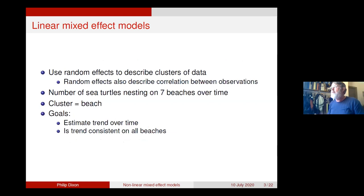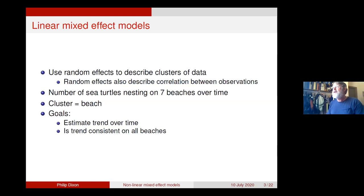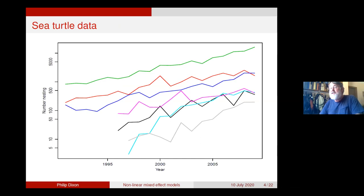A linear mixed effects model is an analysis of variance, or regression, where there are multiple sources of variability — extra random effects. Those random effects are often used to describe clusters of data, essentially describing correlations between observations. To reinforce some ideas, I'm going to look at a dataset of sea turtle nesting numbers on seven beaches over time. Each beach is observed for multiple years; the cluster is the beach. We want to estimate trend over time and ask whether the trend is consistent on all the beaches.